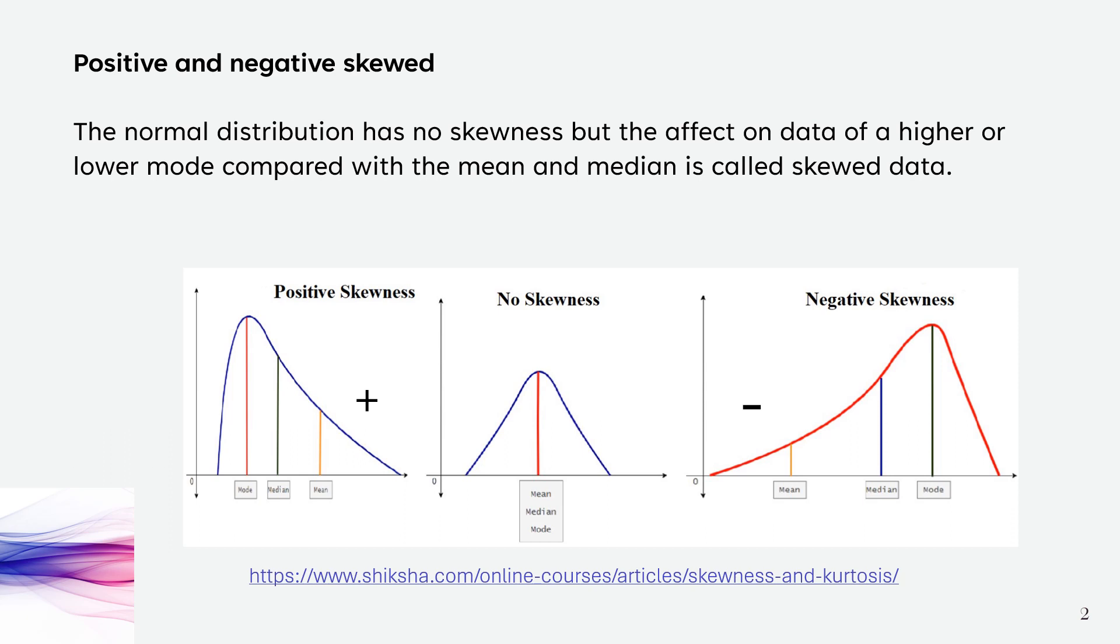One way to look at it is by putting a plus and a minus there. For positive skewness, the tail heads towards the positive side. And for negative skewness, the tail heads to the negative side.